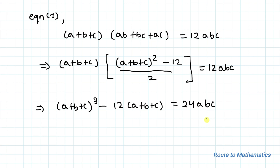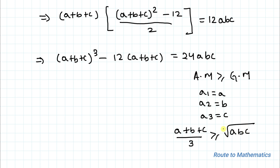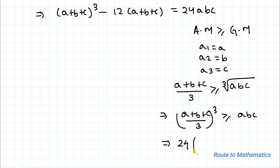To find the maximum value of a+b+c, we apply the AM-GM inequality: (a+b+c)/3 ≥ (abc)^(1/3). Cubing both sides: [(a+b+c)/3]³ ≥ abc. Multiplying both sides by 24: 24·[(a+b+c)/3]³ ≥ 24·abc.